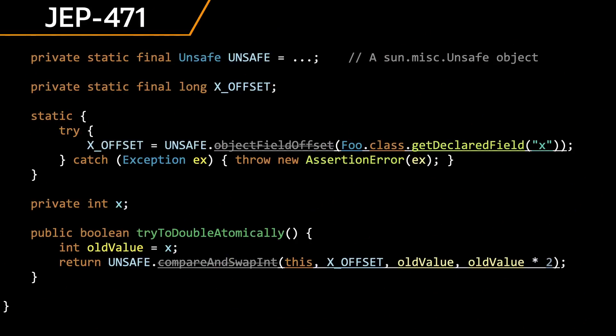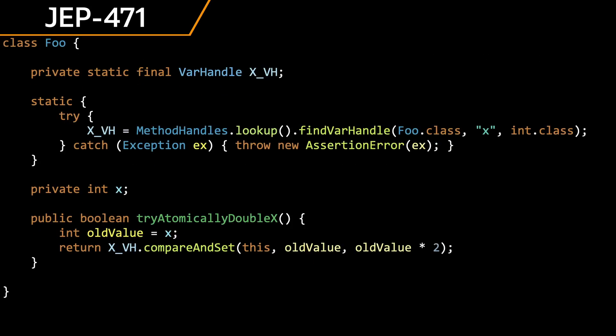The memory access methods in sun.misc.Unsafe have been designated for deprecation for removal. Please migrate towards the equivalent VarHandle and Foreign Function and Memory APIs added in JDK 9 and 22, respectively.